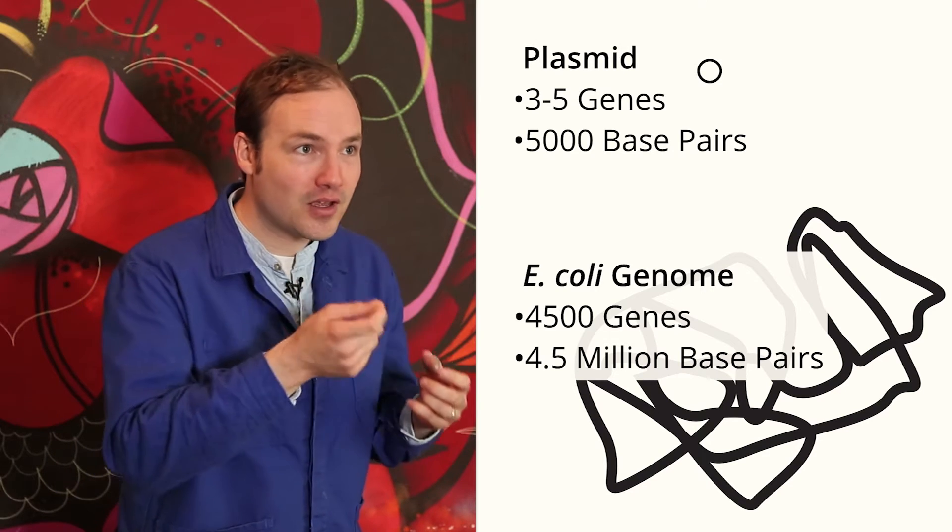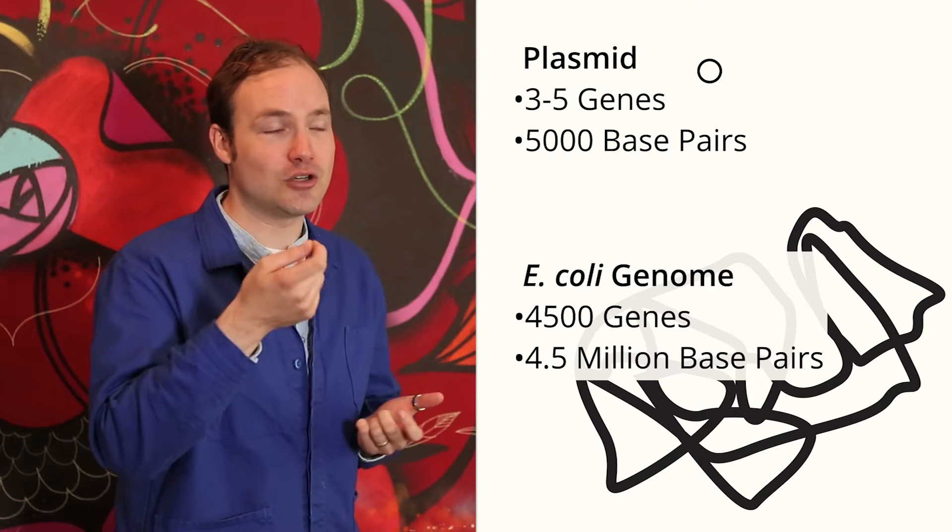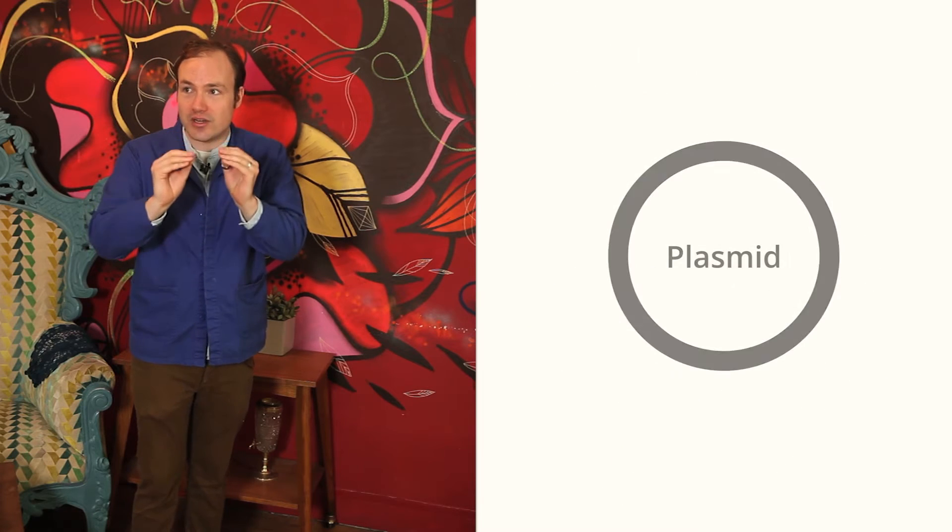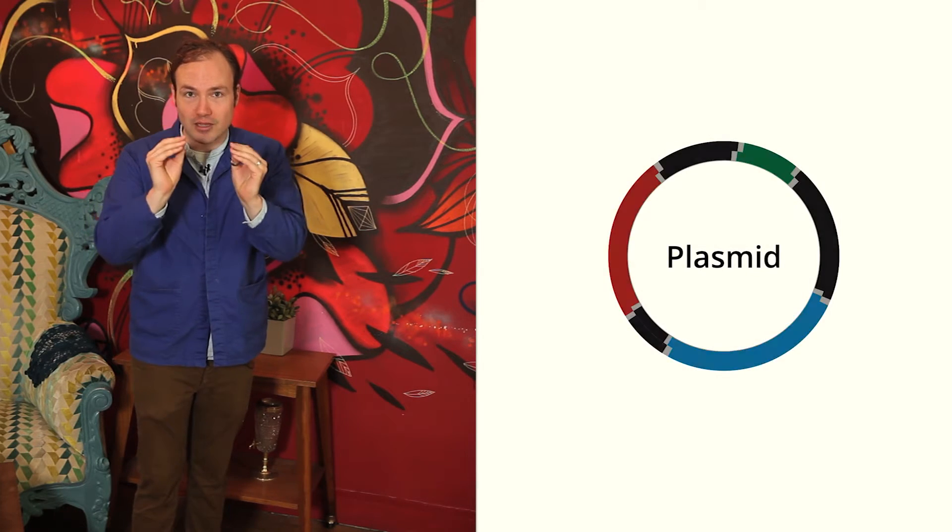Because plasmids are small, they're easy to understand, engineer, and work with in the lab. Plasmids contain three key functional elements.